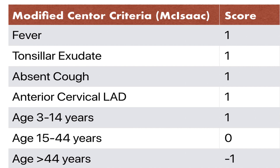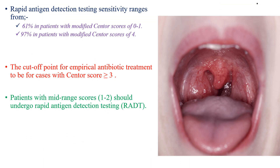The maximum score is 5. Rapid antigen detection testing sensitivity ranges from 61% in patients with a modified Centor score of 0 to 1, and 97% in patients with a modified Centor score of 4. As the score increases, the likelihood of group A Streptococcus pyogenes as the cause of sore throat increases. The cut-off point for empirical antibiotic treatment is a Centor score greater than or equal to 3.